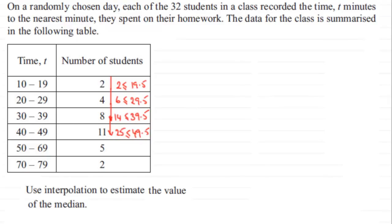What I do is I just draw a line representing that class interval. On this class interval, I'm going to mark in the lower bound, which is 39.5, and the upper bound is going to be 49.5. So I've got my class interval there.